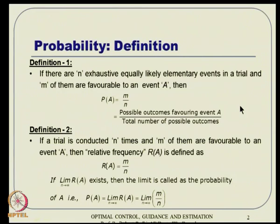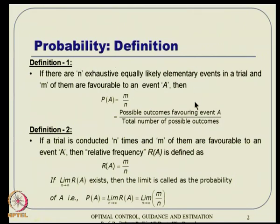These are some of the very basic definitions of probability. There are two different ways of looking at it. The first definition is: if there are n exhaustive equally likely elementary events in a trial and m of them are favorable to an event A, then the probability of A is defined as m over n. You have n exhaustive elementary events and m of them are favorable to event A, so probability of A is m by n — that is, possible outcomes favoring event A divided by total number of possible outcomes. It is very intuitive.